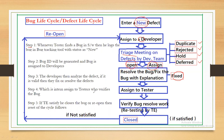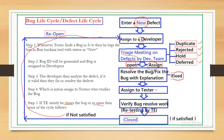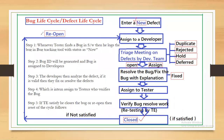Once fixed, the modified version is given to test engineers, who verify the bug resolution — this type of testing is called retesting. If the test engineer is satisfied, the status is set to 'Closed.' If not satisfied, the defect is reported back to developers with the status 'Reopen.' As a test engineer, we provide only three statuses: New, Closed, and Reopen. All remaining statuses are provided by developers.